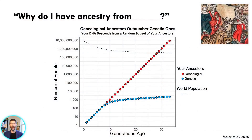This plot should absolutely blow your mind. In red are your genealogical ancestors, in blue your genetic ones. The black dotted line shows the world population size over time. So who are those mysterious ancestors in your family tree if there were more of them than humans on Earth? Well, most of them are duplicates — ancestors who show up in your tree more than once. You have many shared lines with those ancestors. And yes, this is a type of inbreeding, but don't worry — literally all of us have it. This is a simple consequence of having a finite number of people on Earth.